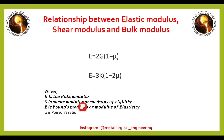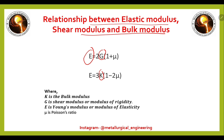Now we will see the relationship between elastic modulus, shear modulus, and bulk modulus. E is the modulus of elasticity or Young's modulus, K is the bulk modulus, and G is the shear modulus or modulus of rigidity. The relationship between modulus of elasticity and shear modulus is E = 2G(1 + μ), where μ is Poisson's ratio. And E = 3K(1 − 2μ) is the relationship between modulus of elasticity and bulk modulus.